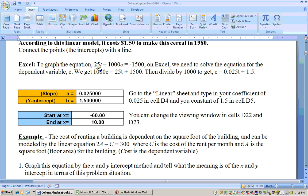To solve this for C, I could take the 25T to the other side, give me negative 1,000C equals negative 25T minus 1,500, and then multiply the entire equation by a negative 1 to give me 1,000C equals 25T plus 1,500. I need to divide both sides by the 1,000, and that will give me C equals 25 divided by 1,000 is 0.025, and 1,500 divided by 1,000 is 1.5.